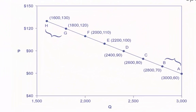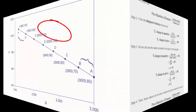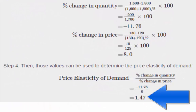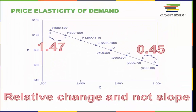Let's now compare the price elasticity of demand between points A and B to the price elasticity of demand between points H and G on the same linear demand curve. Will it be the same or different? Here is the calculation, and we see that it is different. Why are these coefficients different? It is because we are calculating relative changes between price and quantity, not merely slope or opportunity cost.